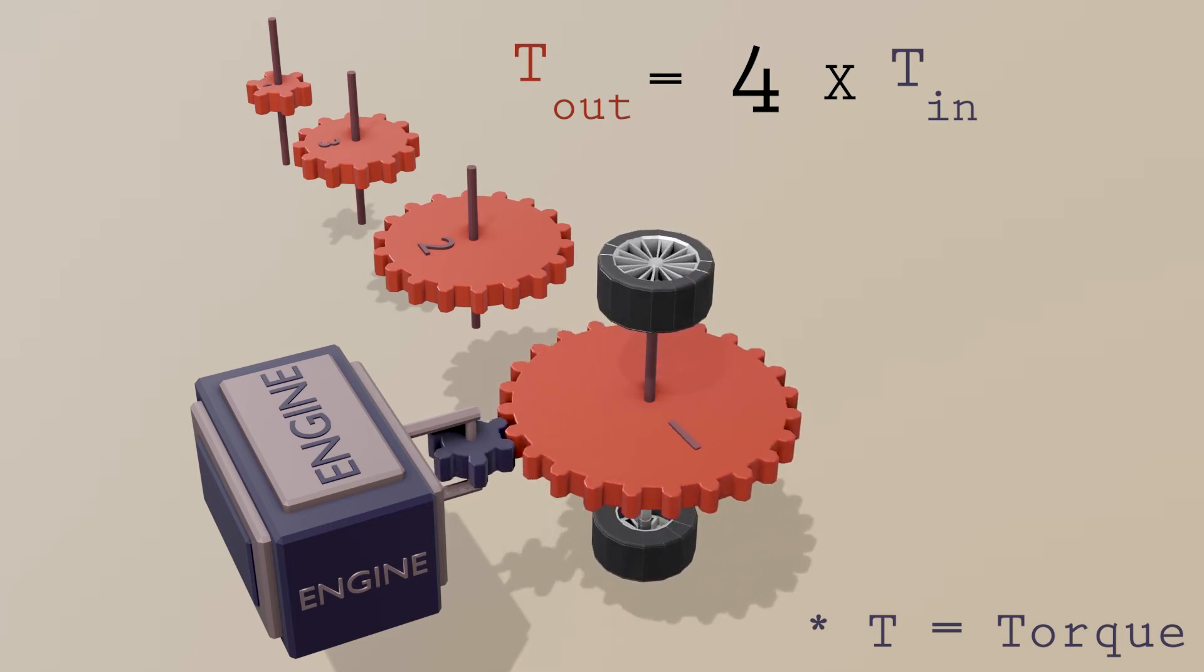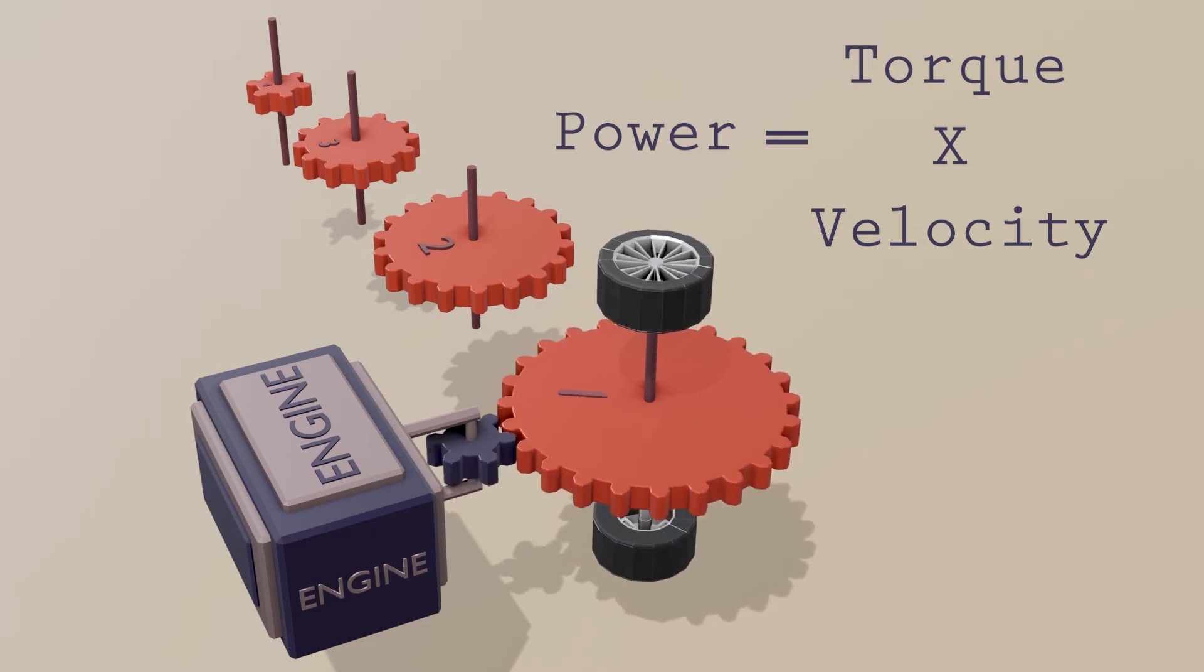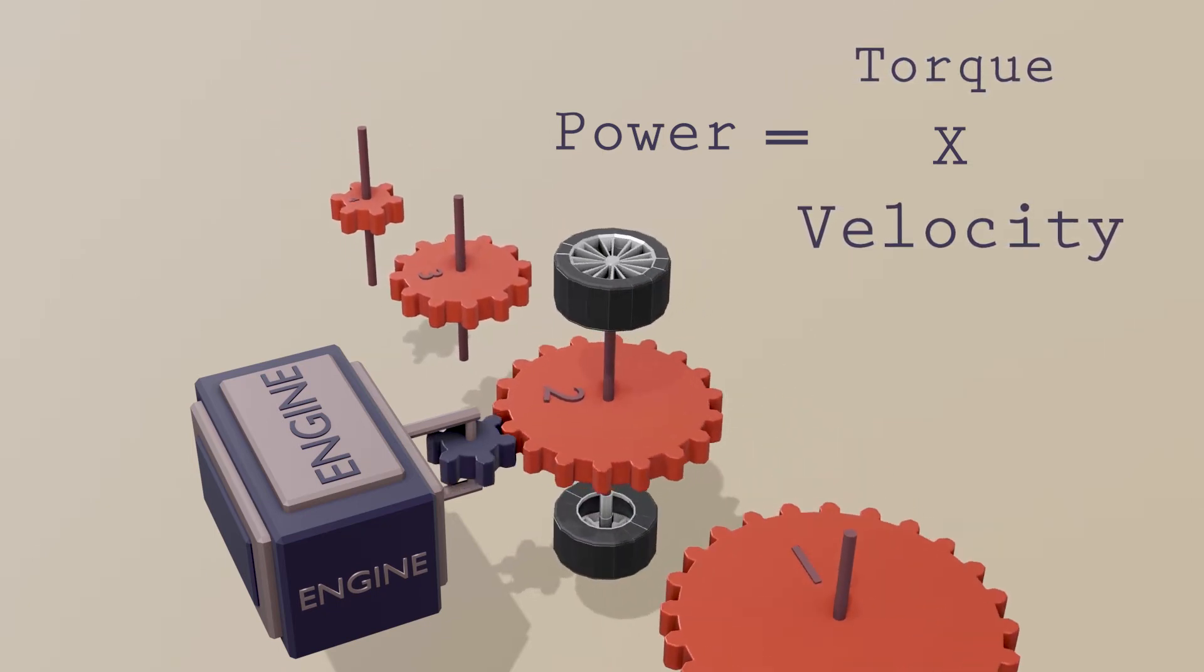But it's not free of cost. We achieve this by sacrificing our speed or velocity. This fact is written as an equation like this. Remember, you can only get limited power from the engine. So when we change gears, we are actually deciding how much engine power should go to torque and velocity. You can improve one by sacrificing the other.